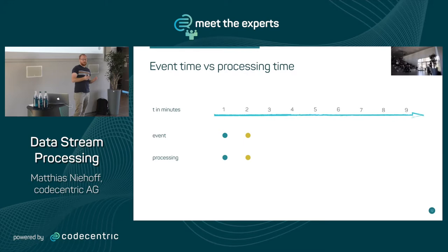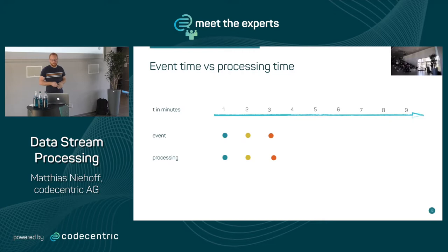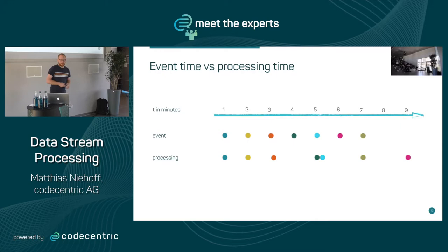In an ideal world, processing time would be the same as event time — meaning the event is observed by your system and you can work with the data right away. Most of the time it's delayed because of wiring and so on. Then the next event gets delayed, or we have out-of-order events — like an event at minute six is seen at minute eight. So we have an out-of-order situation.